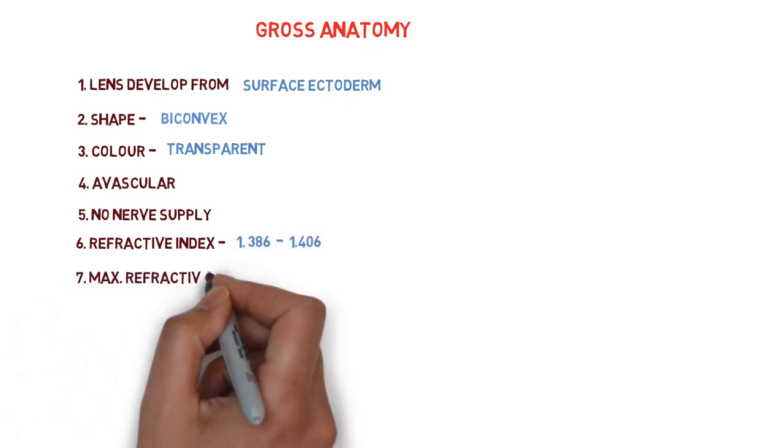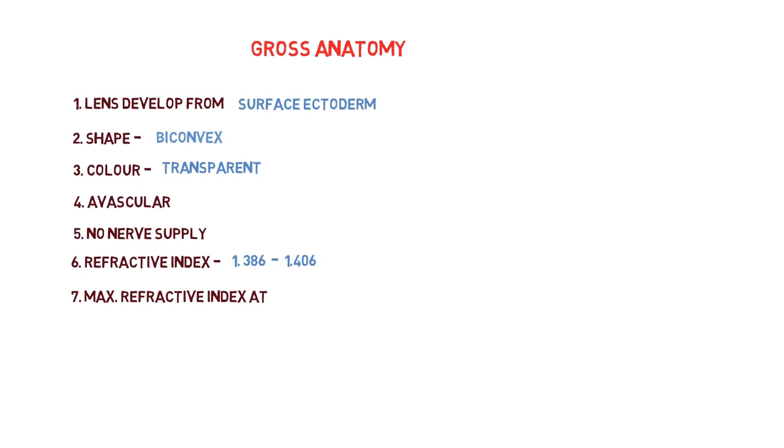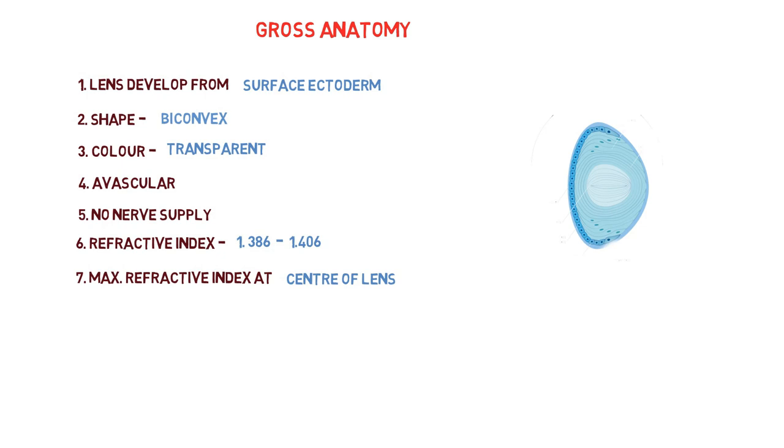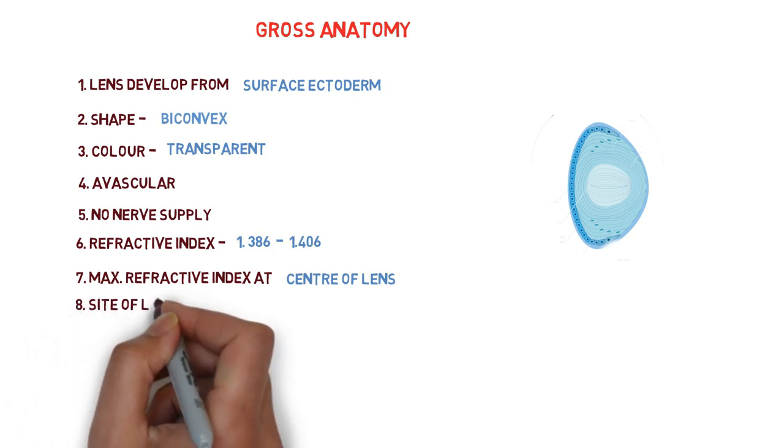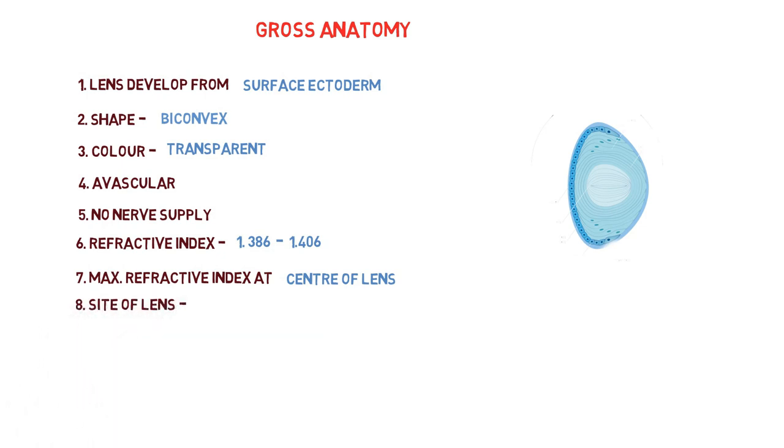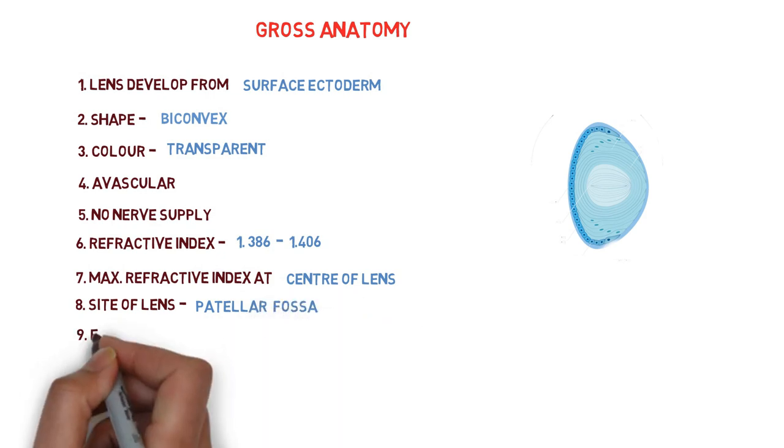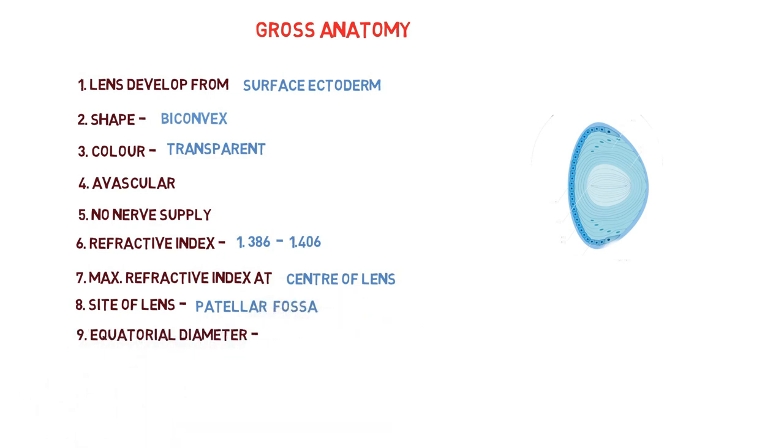The refractive index of a lens is between 1.386 to 1.406, and the maximum refractive index is present at the center of the lens. So what is the site of the lens? Where is it present? The site of a lens is in the patellar fossa and the equatorial diameter is nearly 10-15 mm. The last point is what is the power of a lens? It is nearly plus 16 to plus 19 diopter.